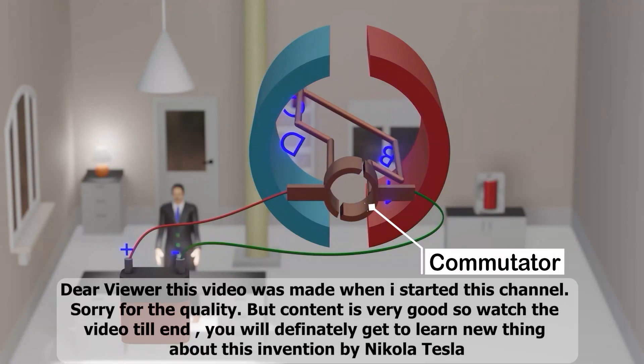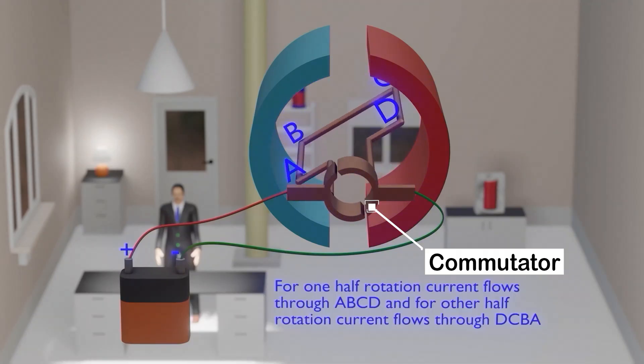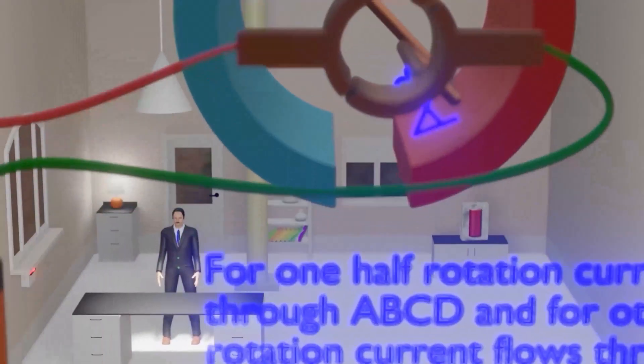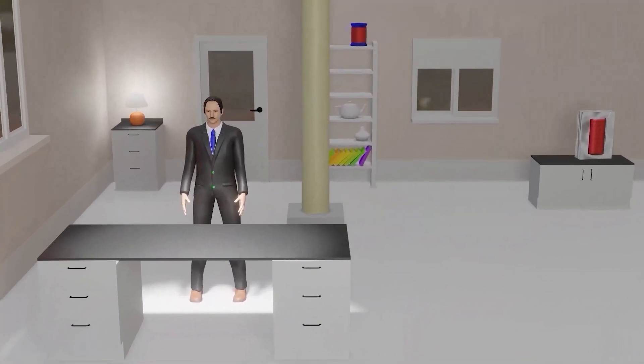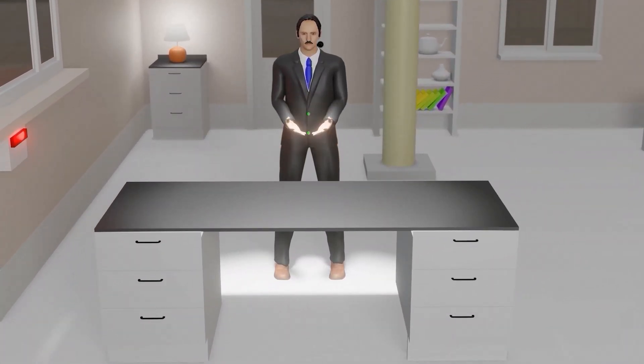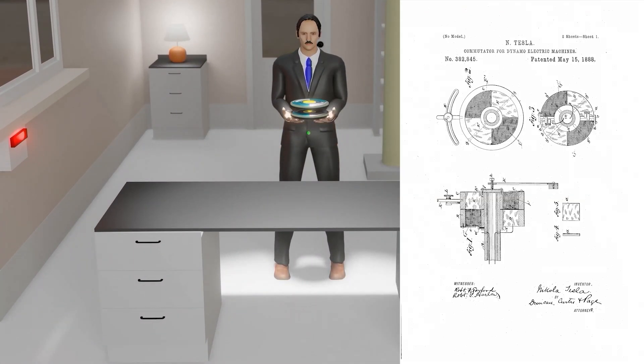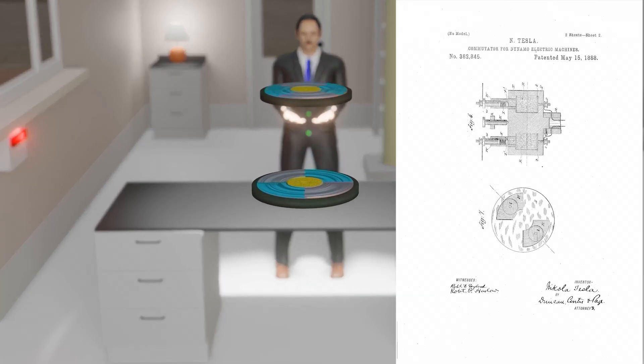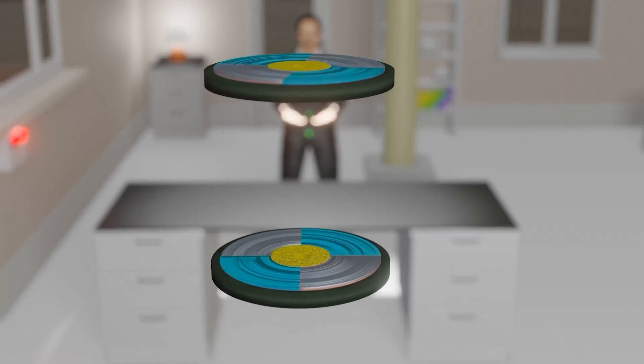Commutators are the devices that connect a motor to the electricity supply, and it also helps in changing the direction in which the current flows in the circuit. Nikola Tesla made certain new and useful improvements in commutators of dynamo-electric machines. Let's explore that. Come along.